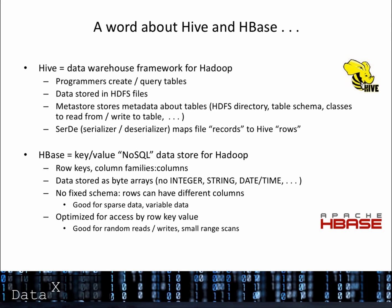HBase is a key-value data store for Hadoop that supports real-time, random read-write access. Data is modeled in column-oriented tables, and each record consists of a row key and one or more column families, each of which may consist of one or more columns. Data is stored as byte arrays in HBase tables, so programmers don't define columns of traditional data types like integer or string. HBase tables also don't have a fixed schema, making them suitable for managing large volumes of sparse or variable data. For optimal runtime performance, programmers often access HBase data by its row key value.